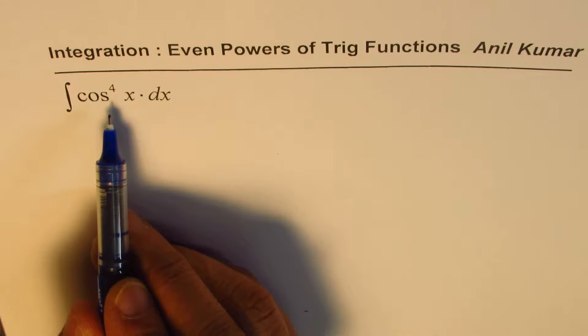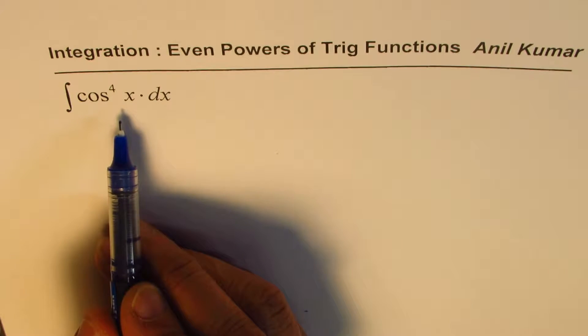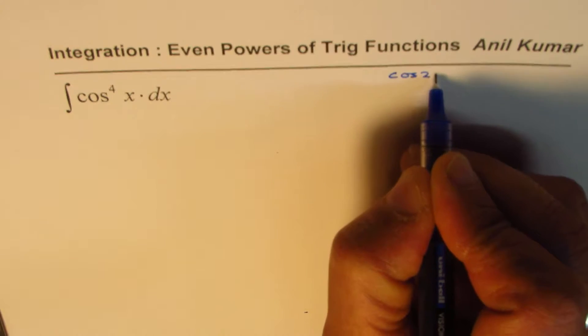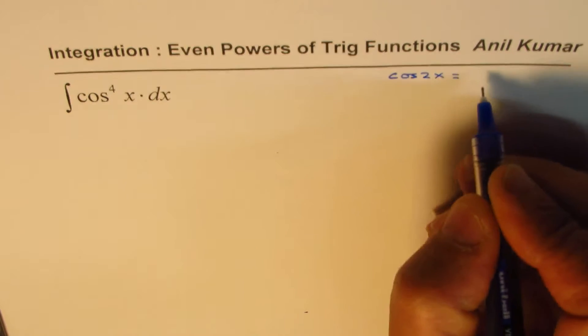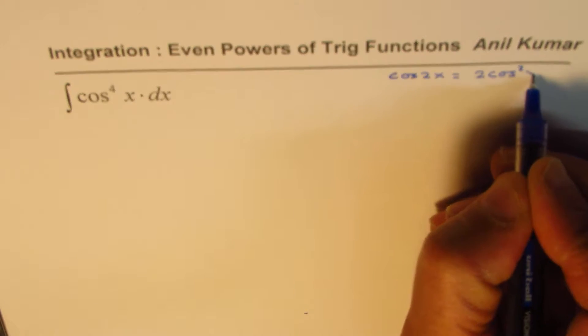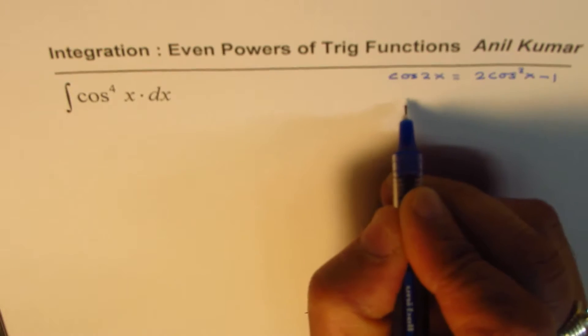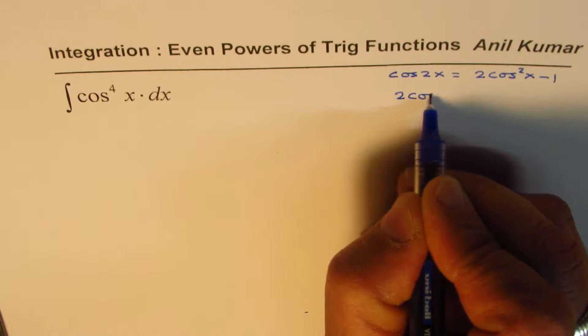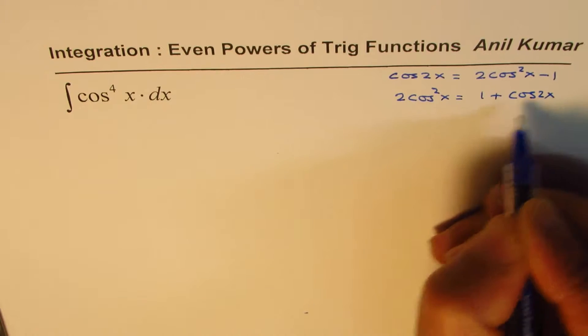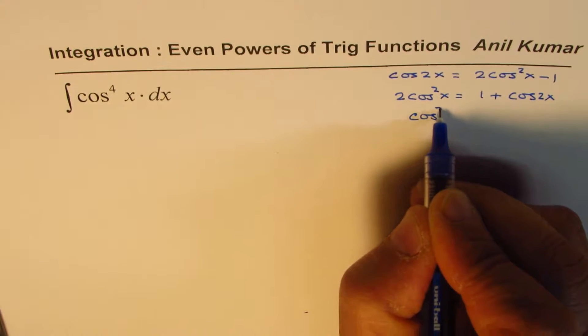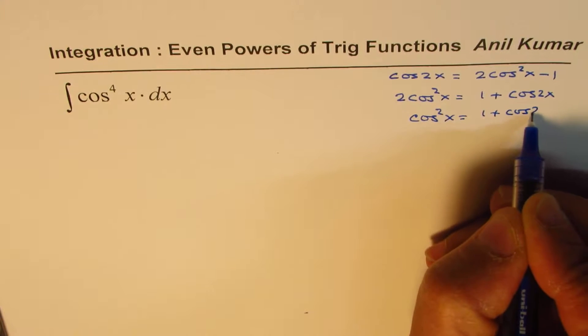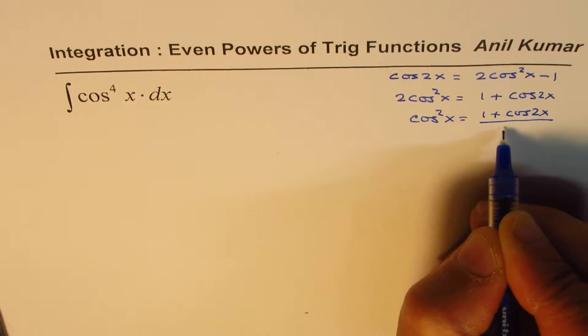Whenever we have even powers, we use the double angle formula. cos(2x) = 2cos²x - 1. Rearranging this: 2cos²x = 1 + cos(2x), or cos²x = (1 + cos(2x))/2.